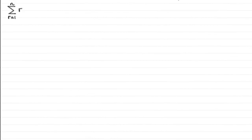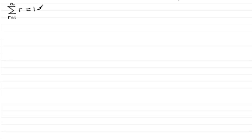Welcome to this series of tutorials on series. In this tutorial I'm going to look at extending the work we've tackled in the past on Sigma notation. I'm assuming you're familiar with this, but just to recap: when we have the Sigma sign with R going from 1 to n, it's shorthand for summing the series starting at R equals 1, then increasing by one to 2, then 3, and so on.